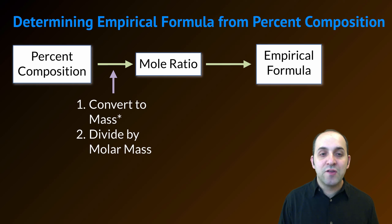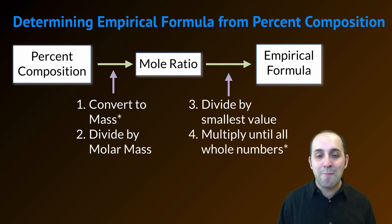To go from percent composition to mole ratio, the first thing we would need to do is convert our information to masses. We would then need to divide by the molar mass. Once we have our mole ratio, we would need to divide that by the smallest value, and then multiply that until every number was a whole number in order to get the empirical formula.